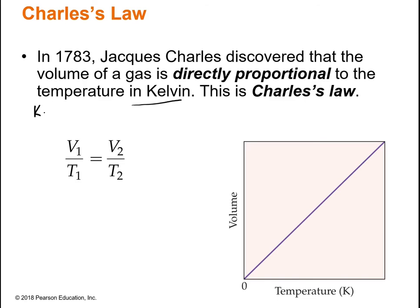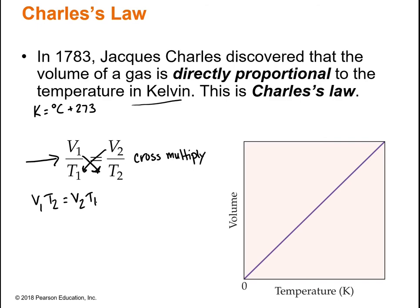The next law is Charles' Law. He discovered that the volume of a gas is directly proportional to the temperature in Kelvin. Remember, Kelvin and Celsius are related by the equation: K = °C + 273. You'll need to know that because all gas laws use temperatures in Kelvin—anywhere you see Celsius, convert it. Charles' Law equation in fraction form requires cross-multiplying before you can isolate a variable.